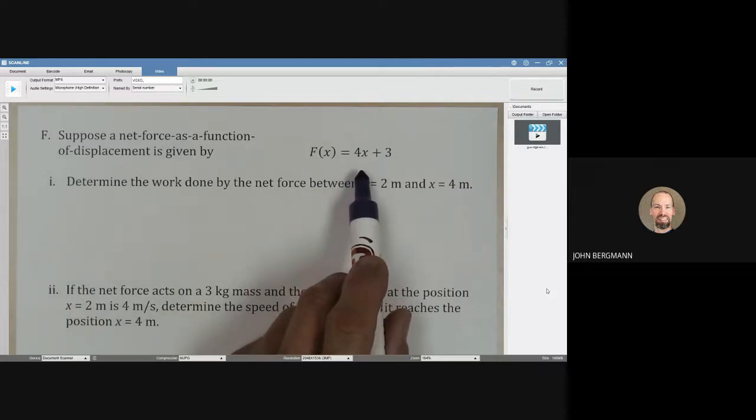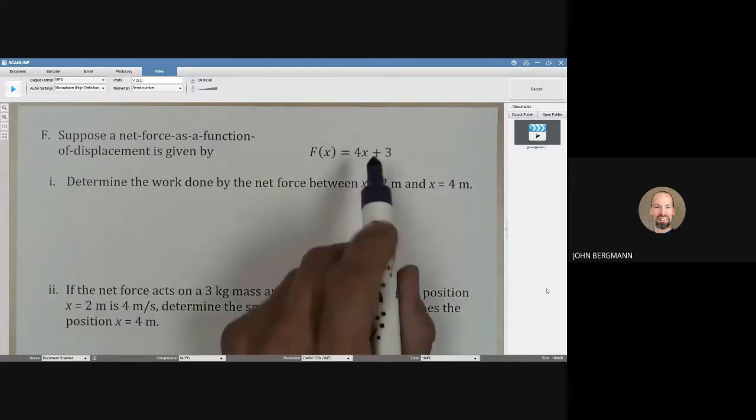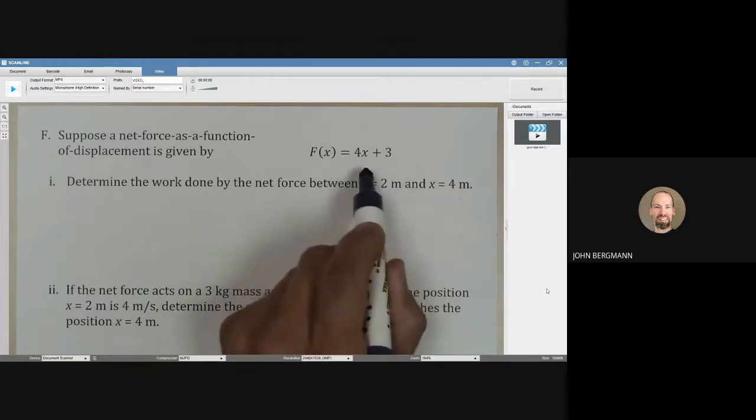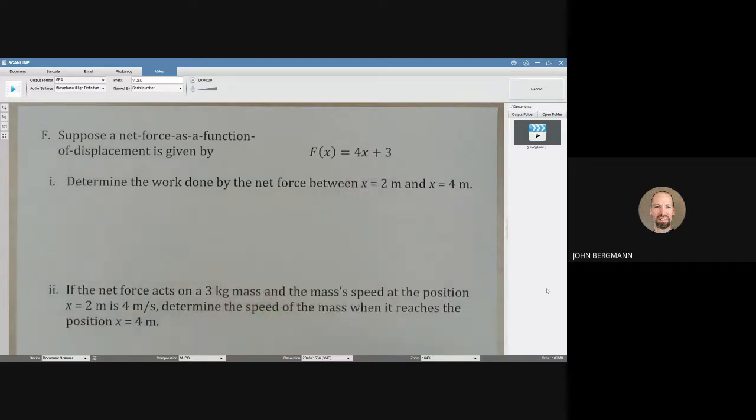The force depends on where the object is. If the object is at x equals 0, then the force would be 3 newtons. If the object is at x equals 1 meter, then we put a 1 in here for x, and that would give us 7 newtons. So you can see that the force is changing depending on where the object is.